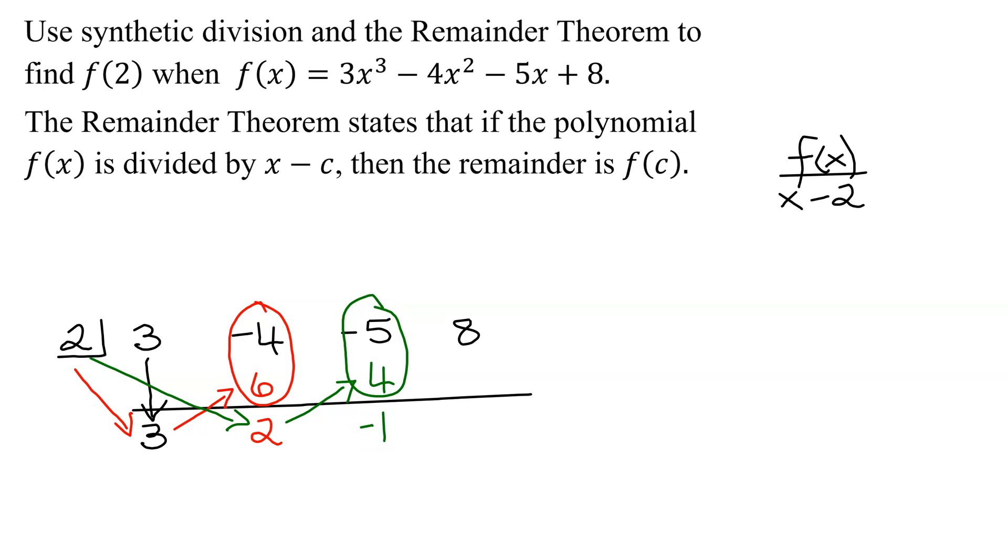Last one, I don't think I'm going to draw arrows, it'll get too confusing. 2 times -1 is -2. Add these two numbers. 8 added to -2 is 6.